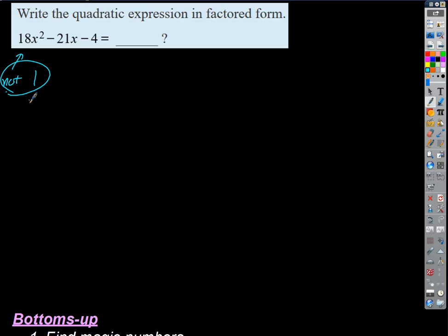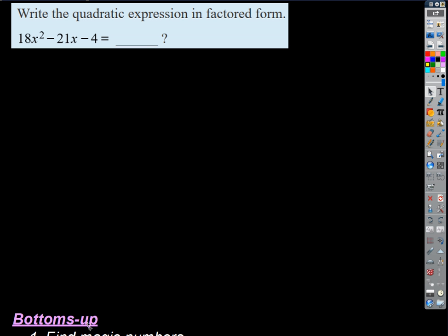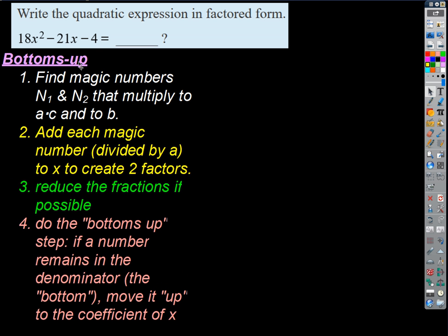So what's our strategy when A ≠ 1? There's a method called Bottoms Up. Raise your hand if you ever learned Bottoms Up. Bottoms Up is not hard — it makes this really pretty easy. So don't be intimidated. Here are the steps — let's just step through these.